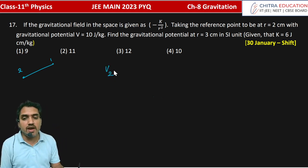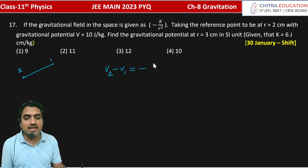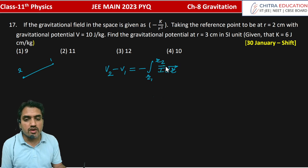To find V2 minus V1, we have a formula that is minus integration from R1 to R2 of gravitational intensity I into dr, and these two vectors are the same.